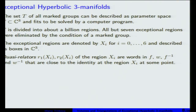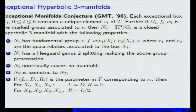Inside these exceptional regions, they discovered words in the generators F and W of this marked group which are very, very close to identity. Based on this information, they suggested there are some nice properties and formulated an exceptional manifolds conjecture: inside every box, there is just one unique element where these words are exactly equal to one. Those quasi-relators then become relators of the fundamental group, which defines a hyperbolic 3-manifold. And this manifold will be exceptional.